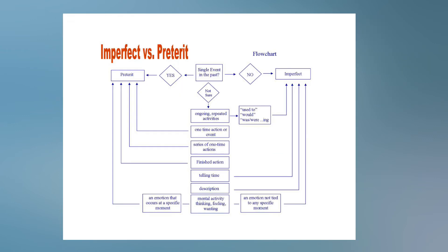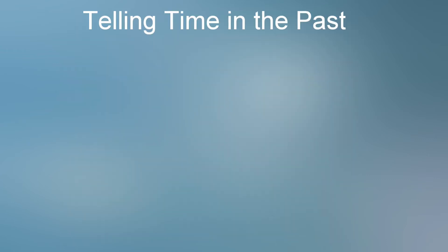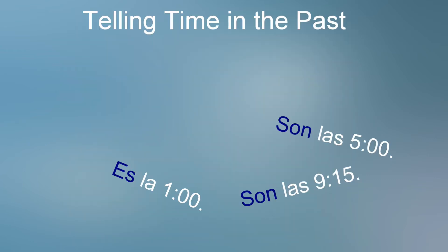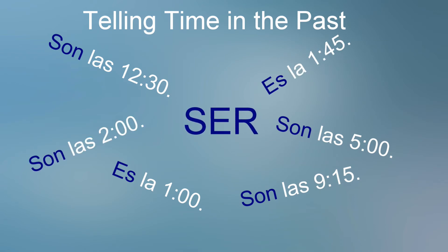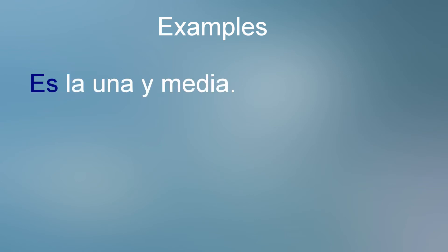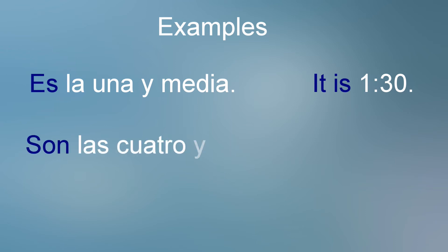As we follow the boxes downward we come to telling time in the past. Telling time in the past is always expressed in the imperfect. You have learned that telling the hours and minutes of the day in Spanish requires the use of the verb SER. In the present tense you would use ES to express anything around one o'clock and SON to express two o'clock or higher. Examples: Es la una y media — it is 1:30 — or son las cuatro y quince — it's 4:15.